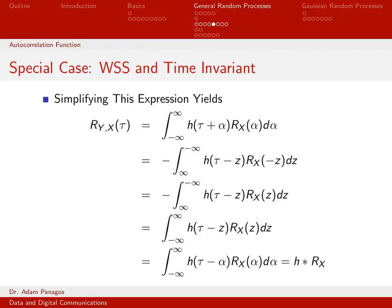Since dz equals negative dα, we get a minus sign. When alpha was positive infinity, z is negative infinity, and when alpha was negative infinity, z is positive infinity. So we end up with this integral. Note that we have the autocorrelation function evaluated at negative z, but autocorrelation functions are always even functions, so r_x(−z) equals r_x(z). Then from this line to the next, we use basic calculus: the negative of an integral from b to a equals the integral from a to b, so the negative sign flips the integration limits.